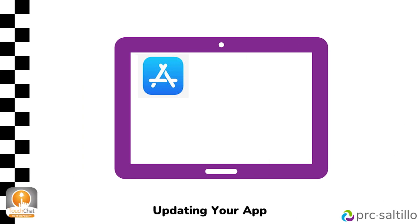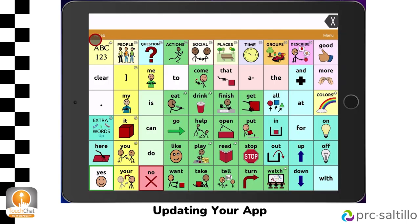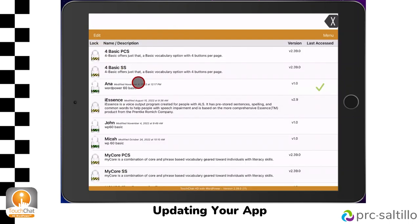Keeping your TouchChat app up to date will ensure optimal performance and add new features and settings when they are released. PRC Saltillo announces new updates on the website blog, in email newsletters, and on social media platforms. To check which version you are running, go to Vocab, then Choose New Vocab. At the bottom of your screen, you will see the version of your TouchChat app.